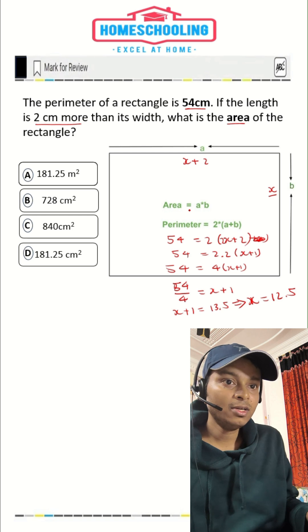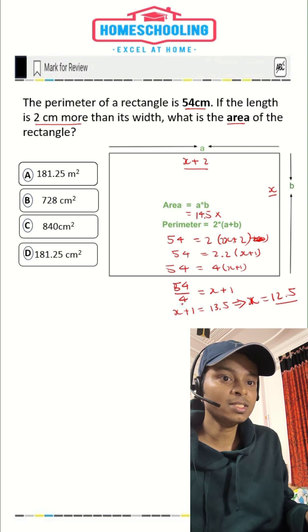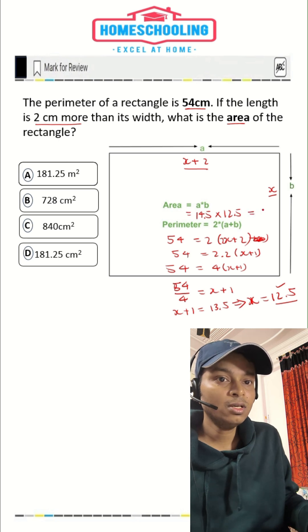So now we have to find the area. Area is equal to A times B. So A is X plus two. X is 12.5, so 12.5 plus two, that would be 14.5 times B. B is X and X value is 12.5. So 14.5 times 12.5, that would be equal to 181.25.